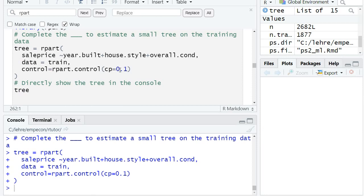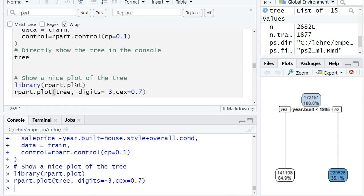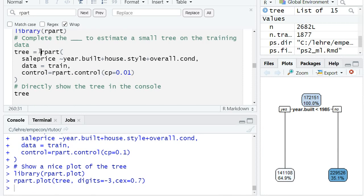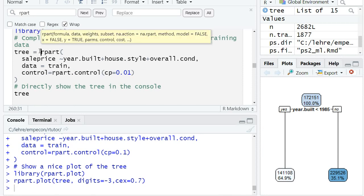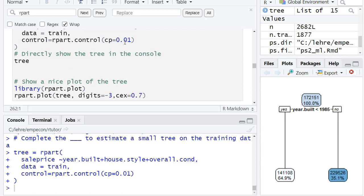Currently, I have set it to 0.1, and I can plot the resulting tree. We see we have a very small tree, it's only basically one split we do. If I reduce the complexity parameter, so it's actually a penalty if I reduce it, then the estimated tree becomes more complex. So I set it to 0.01.